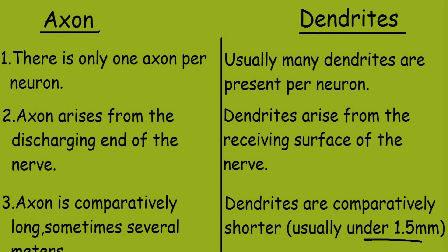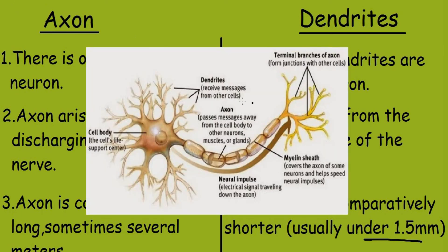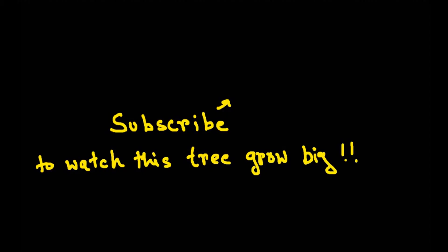These were the differences between axon and dendrites. Let's look at a diagram. In this picture, you can clearly see that dendrites are responsible for receiving the message from other cells. For the axon, they pass messages away from the cell body to other neurons, muscles, or glands. This inner portion is the axon, which is covered by the myelin sheath in order to help speed up the neural impulse.